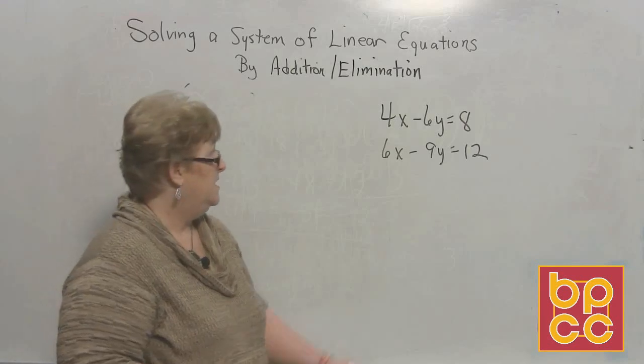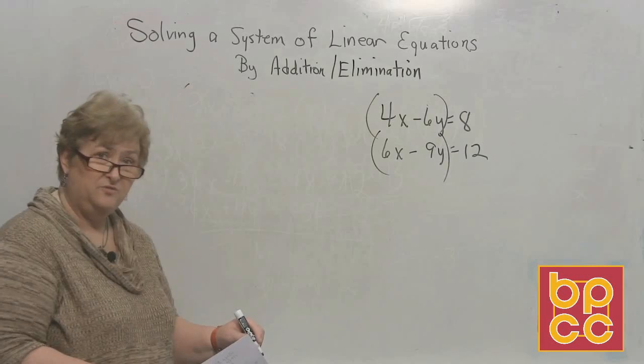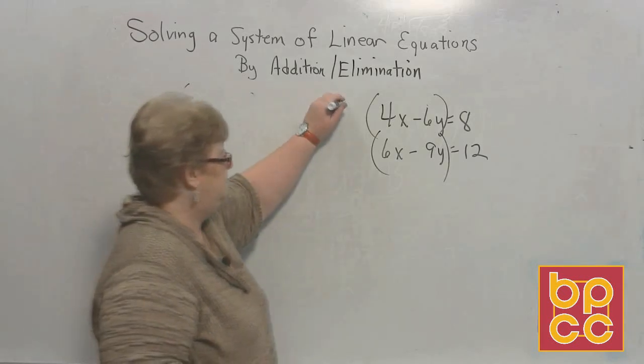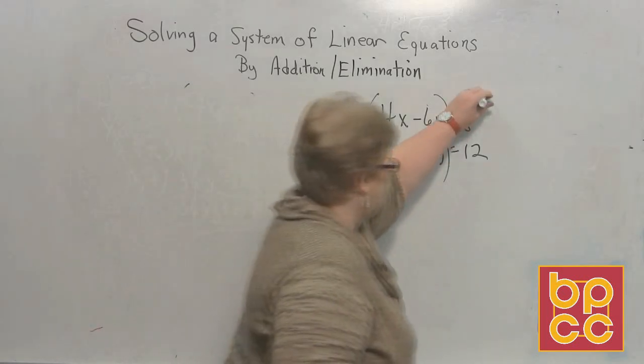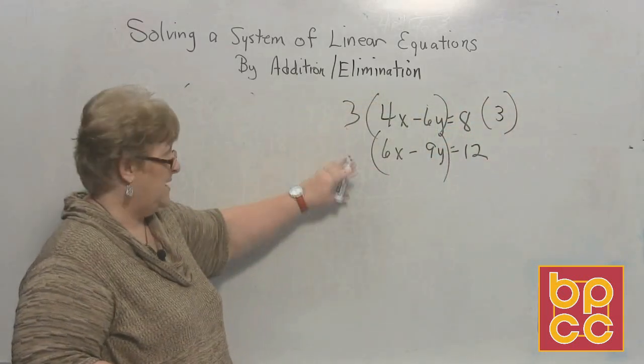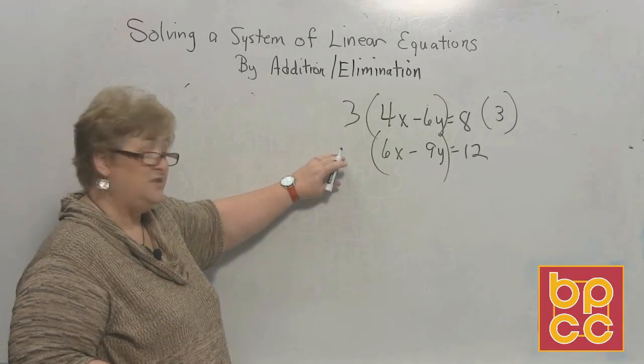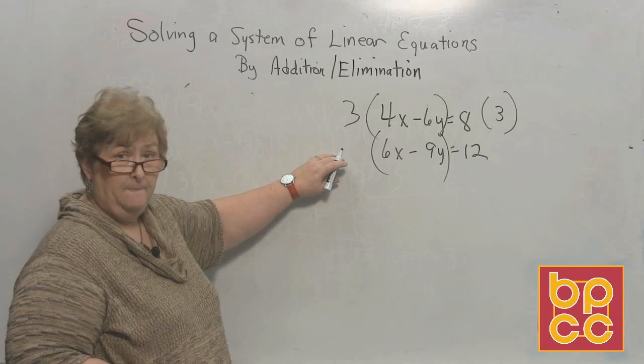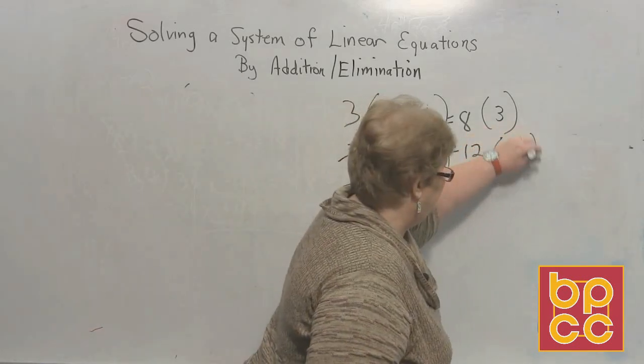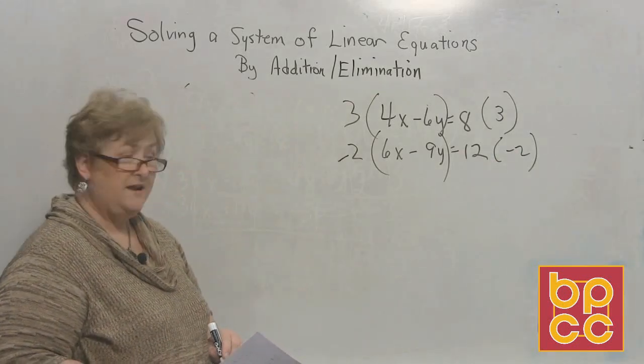But once again, I do like positive x's. You may certainly do the y's if you want, but I'm going to do my positive x's. So I need to turn those x's into a positive 12 and a negative 12. So I'll just pick 3 for the first one. 3 on this side, 3 on this side. That's going to be a positive 12, so I need this to be a negative 12. So what number am I going to use here? 6 times what's going to be a negative 12? A negative 2. Negative 2 on both sides.